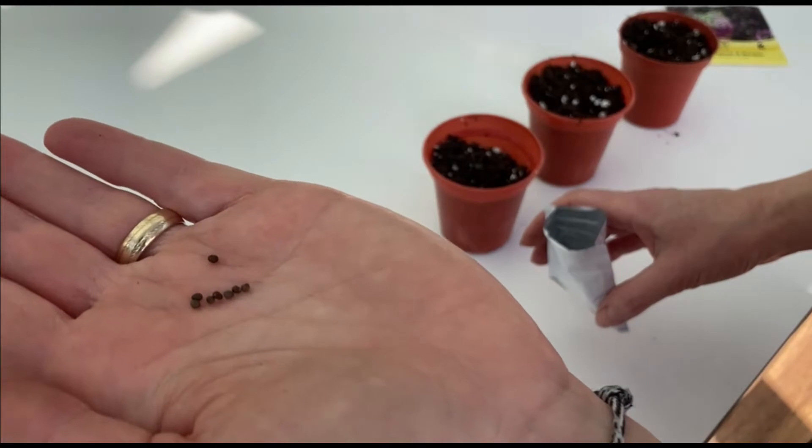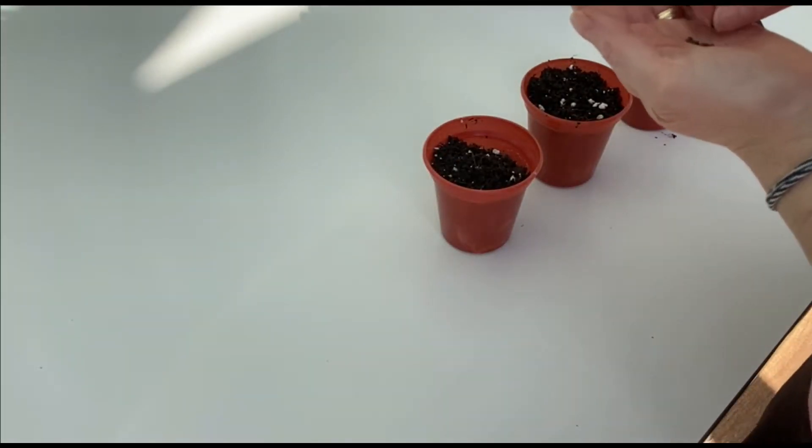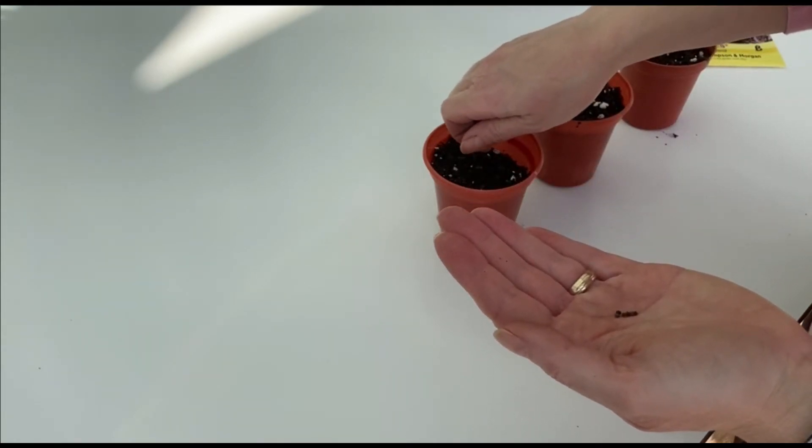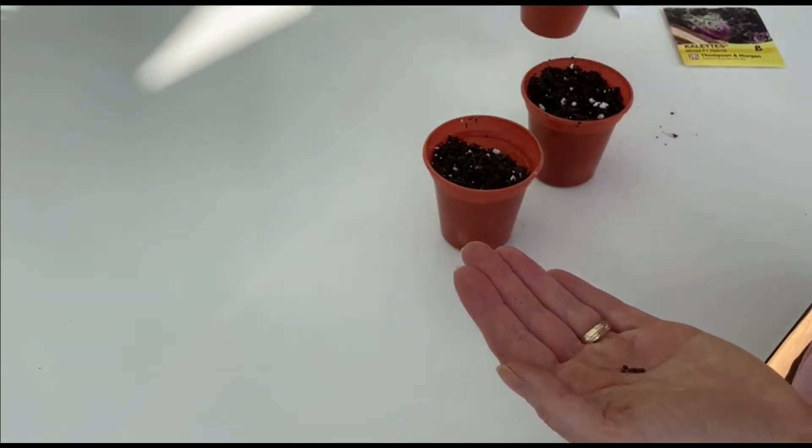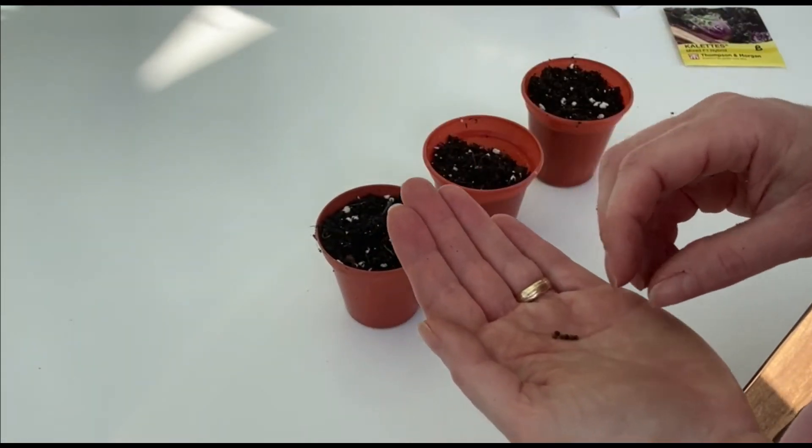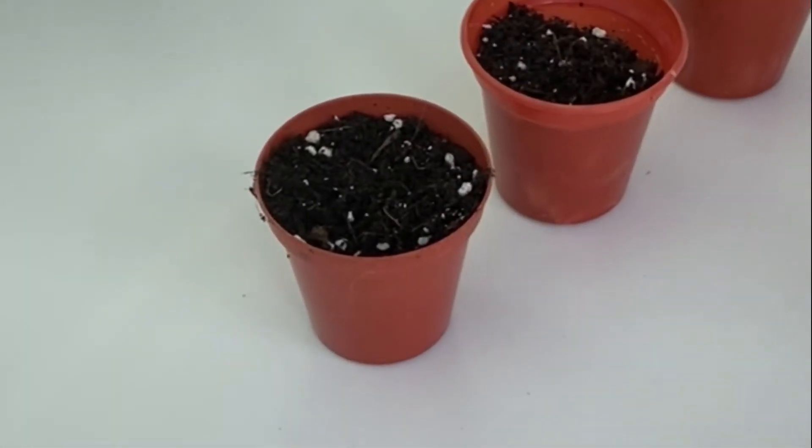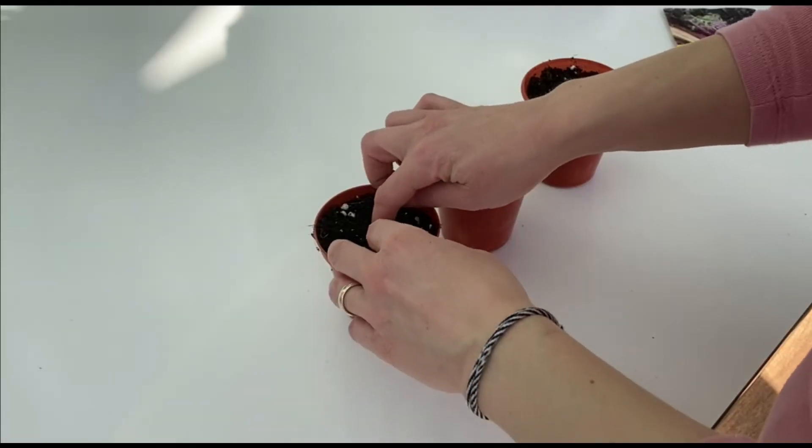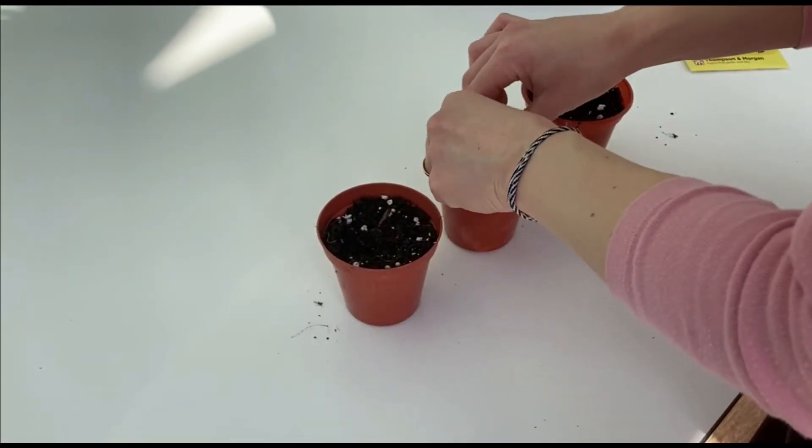I'll be sowing a few this month in March and also a few next month. You can also direct sow these in May if you like. You need to grow these in a propagator or pots and trays with lids, and germination takes around four to seven days. Make sure you remove the lid or cover when the seedlings appear. I'm sowing these seeds one per pot about a centimeter down and then just lightly cover them over and firm them in.